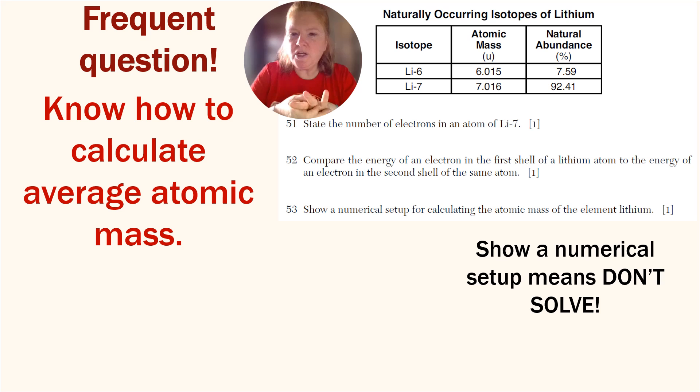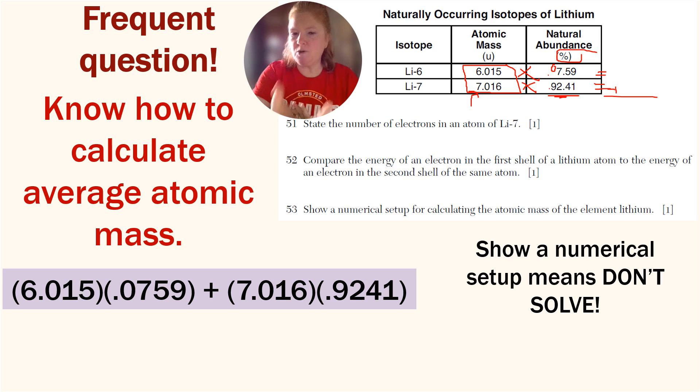A frequent question: knowing how to calculate average atomic mass. So we have to convert the percent into a decimal, so we're going to divide by 100, and then our decimal is here. Then I'm going to multiply these numbers together: 6.015 times this, get an answer. Multiply those two numbers and then add up those two answers. And I should get a number that is in between these two numbers but closer to the one that is more abundant. That means my answer should basically be seven. When I get an answer, it should be close to seven. So you set it up like this. It says just show a numerical setup - you don't have to calculate it. Sometimes you have to calculate it; here you don't. You just have to be able to set it up. That's it. You got this. You can do it.